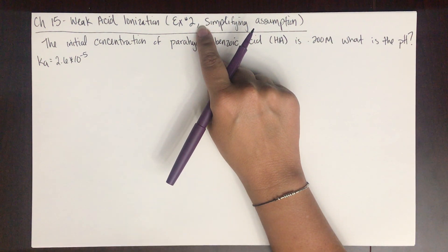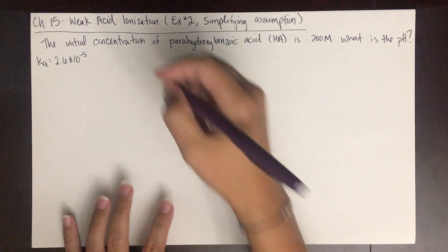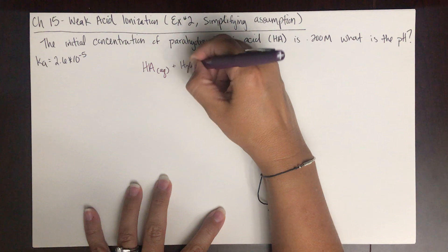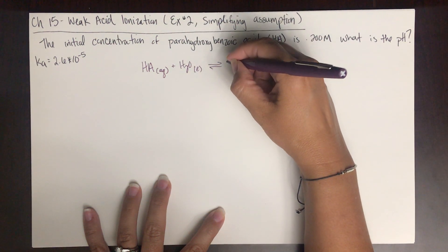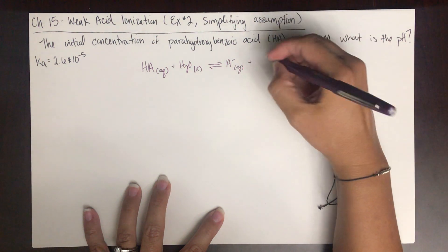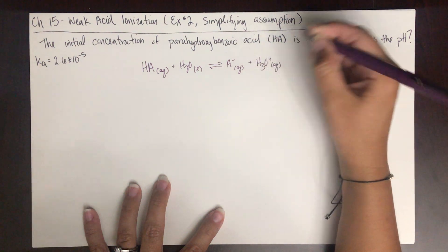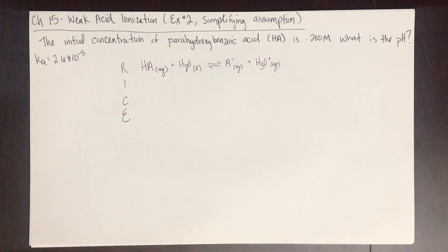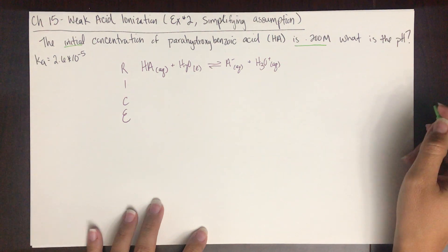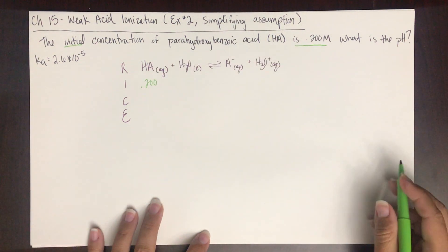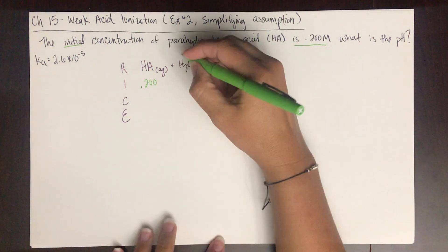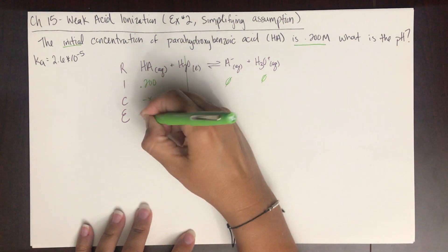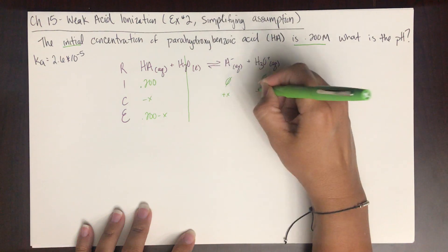Let's write the generic weak acid ionization: HA — in this case parahydroxybenzoic acid — plus water, is in equilibrium with A⁻ (aqueous), the conjugate base, and H₃O⁺, the conjugate acid of water. The initial concentration is 0.200 molar. We don't start out with any products, and water is a pure substance so it's not included in the equilibrium table. The ICE table gives us: minus X, 0.200 minus X, plus X, plus X, X, X.